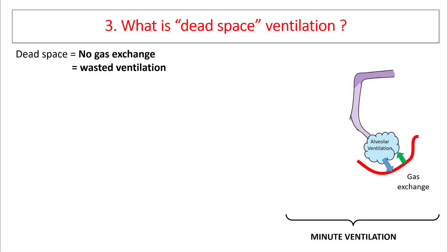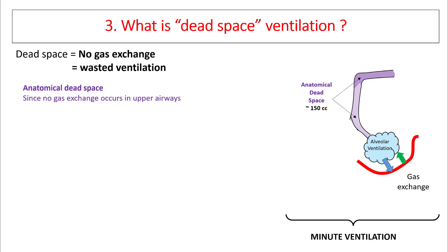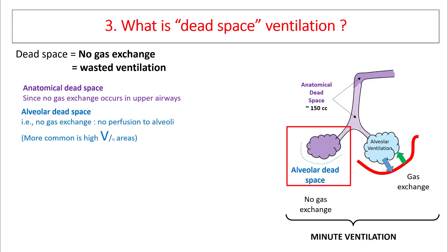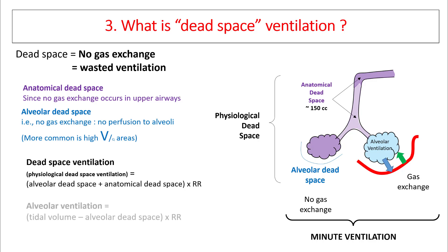Dead space is a very common cause for hypercapnia. Dead space is an area where there is no exchange happening — this is wasted ventilation. There are two types: anatomical dead space, which is your upper airways where no exchange occurs, about 150 cc in normal human beings; and alveolar dead space, where your alveoli do not get any perfusion. Understand that pure dead space is uncommon — mostly these are alveoli with high V/Q ratios tending towards dead space. The combination of anatomical and alveolar dead space is your physiological dead space.